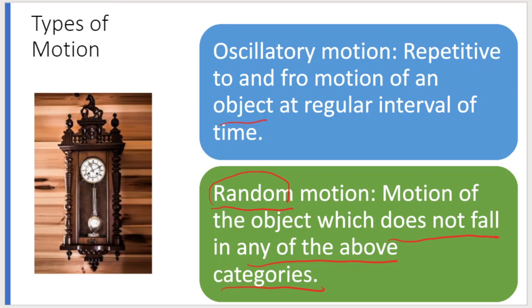Because linear, circular, and oscillatory motions all occur at regular intervals of time, but random motion does not fall into any of those categories.